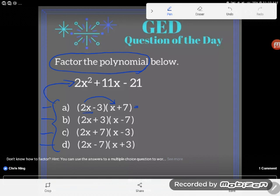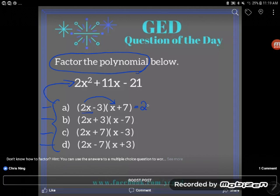2x times x first term times first term gives me 2x squared. 2x times positive 7 would give me positive 14x.